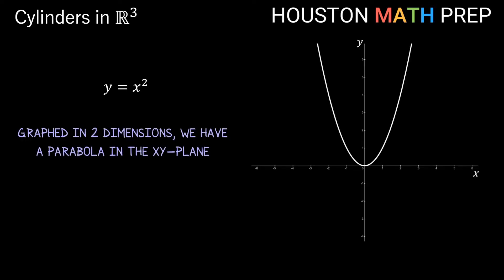Let's take a look at some examples of cylinders that can help us get an idea of how these work. Let's start with an equation we're probably pretty familiar with from algebra: y = x². If we were to graph this equation in 2D space, the graph would be a parabola in the xy plane.